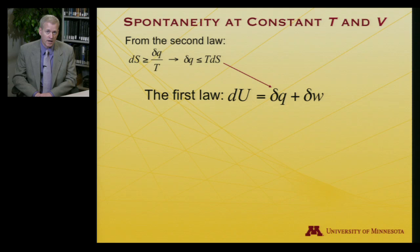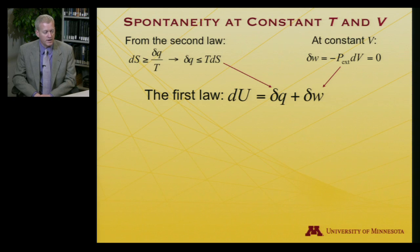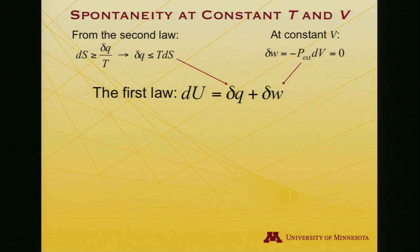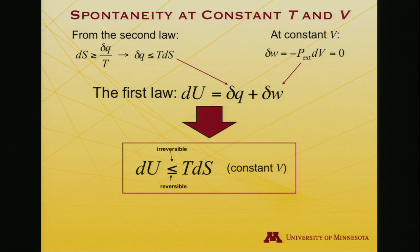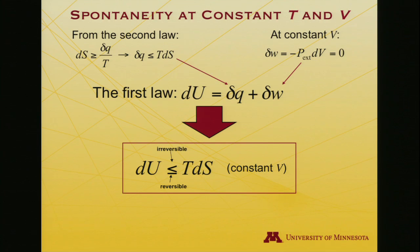The second law says that dS is greater than or equal to δQ over T, which I can rearrange to substitute T dS in for δQ. Moreover, at constant volume the work is minus the external pressure times dV, which equals zero at constant volume.